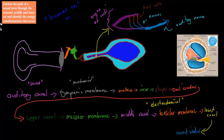The dot point says: outline the path of sound waves through the external, middle, and inner ear, and identify the energy transformations that occur. So we need to go from the outer, through the middle, to the inner ear, and talk about what kind of energy transformations occur at different points.